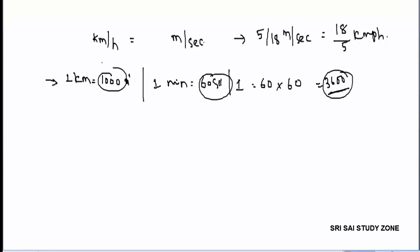To convert 1 km per hour to meters per second: 1 km equals 1000 meters and 1 hour equals 60 into 60 seconds equals 3600 seconds. The zeros cancel, giving us 10 by 36, which simplifies to 5 by 18. So to convert km/hr to m/s, multiply by 5 by 18.